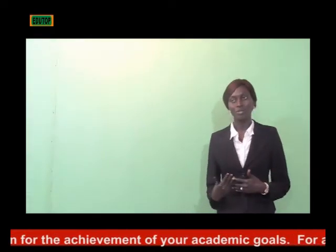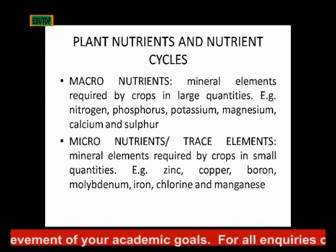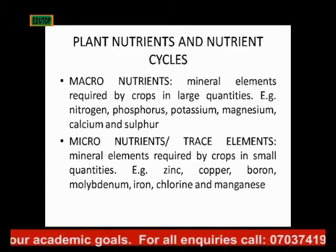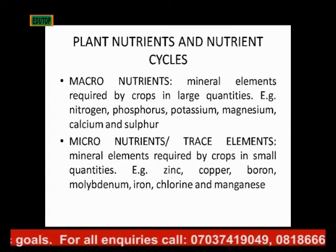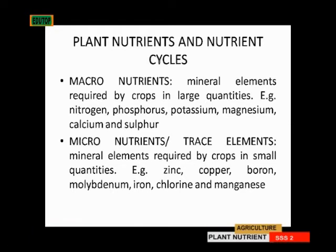For the micronutrients, also called trace elements, they are mineral elements required by crops in very small quantities. Examples of micronutrients include zinc, copper, boron, molybdenum, iron, chlorine, and manganese. Those are the two categories of plant nutrients: macroelements and microelements.